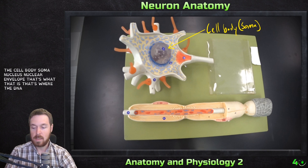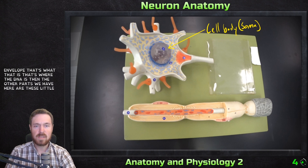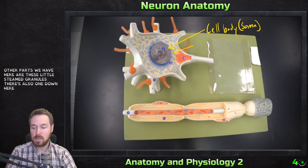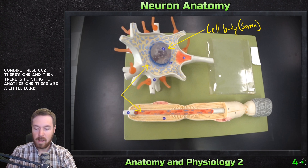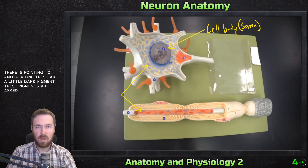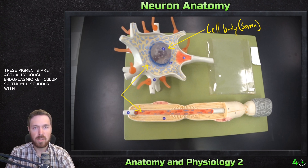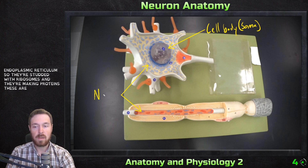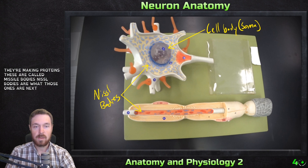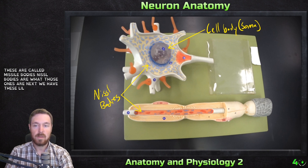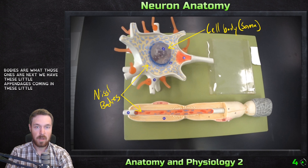The other parts we have here are these little stained granules — there's also one down here. These are little dark pigments. These pigments are actually rough endoplasmic reticulum, studded with ribosomes and making proteins. These are called Nissl bodies.